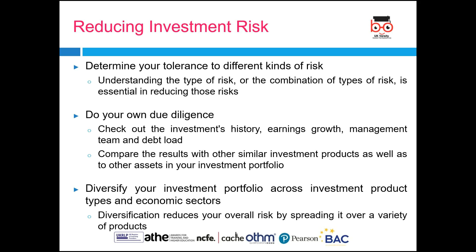So how can you basically reduce investment risk? The first thing is an assessment of your risk profile — determine your tolerance level, understand each type of risk or combination of risks, which can prove useful in reducing the risk. The second is to do your own due diligence — don't just go by information provided by your broker or friends. Check out the investment history and earnings growth. For example, if researching a stock, see the 52-week high and low, the PE ratio, the industry PE ratio, how the company performs, and whether it is generating revenues and net income from its regular business.